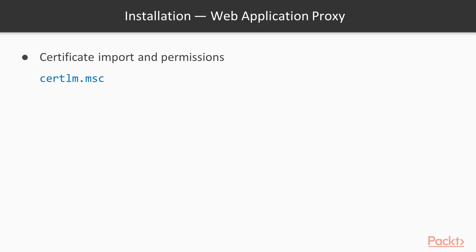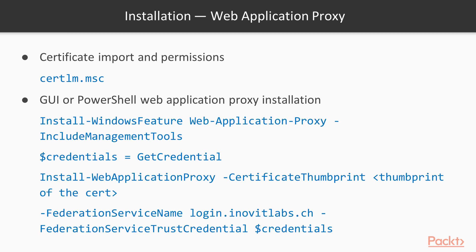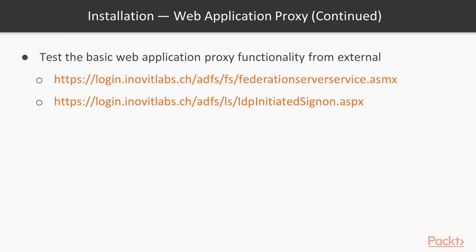Now that we have configured and tested the ADFS farm, we start to install and configure the web application proxy. The first step is to install the SSL certificate we already used on the ADFS server. Afterwards we will install and configure the web application proxy over the Server Manager. As already mentioned for the ADFS part, you can also do that with the related PowerShell cmdlets: Install-WindowsFeature and Install-WebApplicationProxy. We will then test our setup from our management Windows 10 client externally with the same links we used to check the ADFS installation.